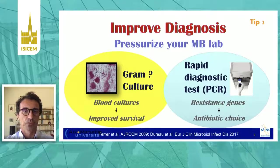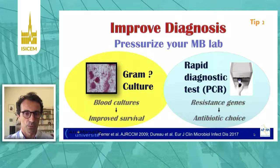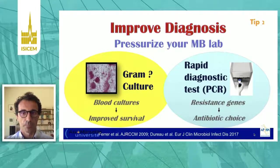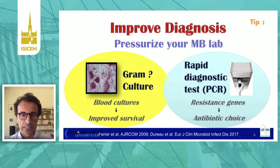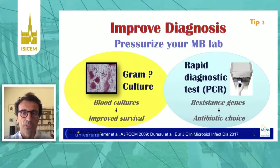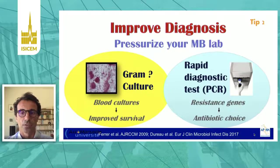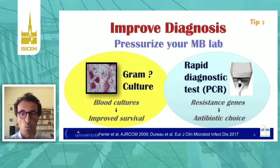You should pressurize them to have the result of your culture very quickly. And simply the fact of collecting blood for culture is associated with improved survival, just because it is a good practice. If you are lucky, you can have rapid diagnostic tests using rapid PCR. The level of evidence to use this kind of device is pretty weak today, but we will have full development in the next years. These tests make it possible to have the resistant genes very quickly and to adapt the best choice of antibiotics in a very short time — one to six hours.